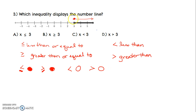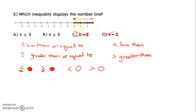Looking at our problem with a closed circle, I know it's either less than or equal to, or greater than or equal to. So C and D do not have a shot — less than or greater than would give an open circle, not shaded in. We include the 3 in our answer, which is why we shade it in. Then the numbers 4, 5, 6 are all bigger than 3, so we need all the x's that are greater than or equal to 3.